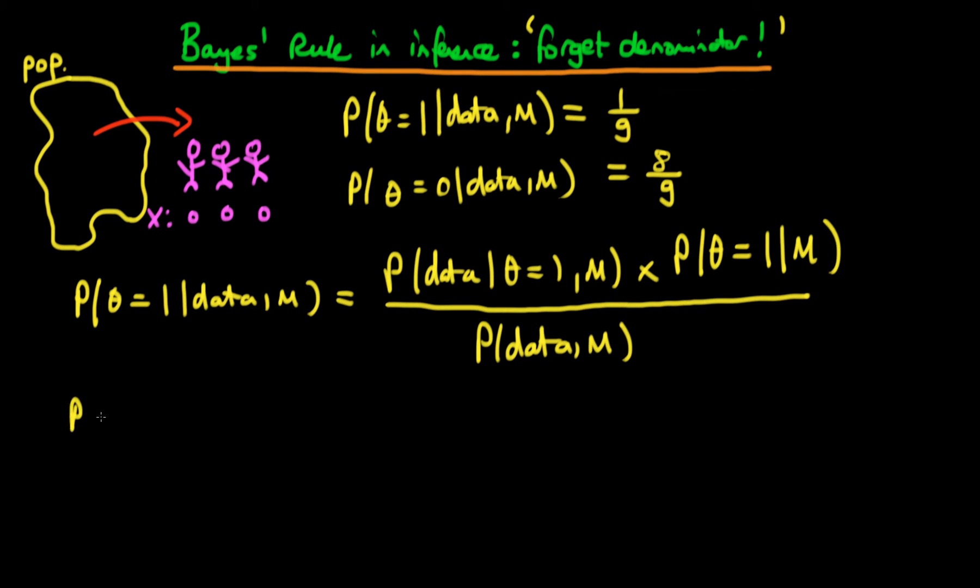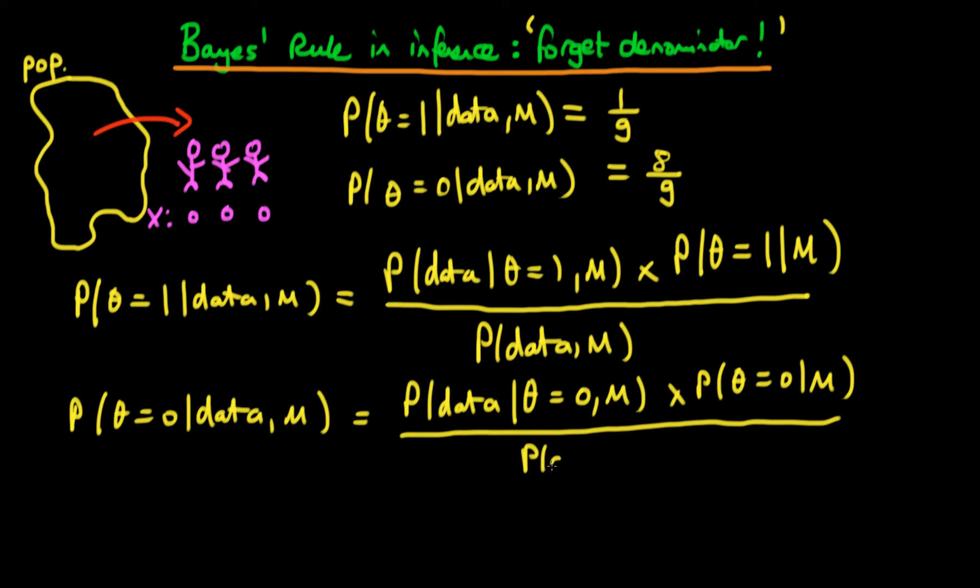Then for the second one, the probability that theta is equal to 0 given our data and given our choice of model is going to look very similar. However, the numerator here is going to be the likelihood, which is now slightly different as the probability of our data given that theta is equal to 0 and given our model choice, times the probability that theta is equal to 0 given our model choice, all divided through by the probability of our data given our choice of model.